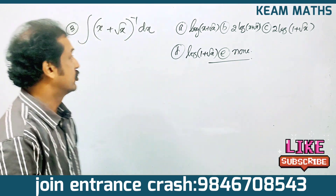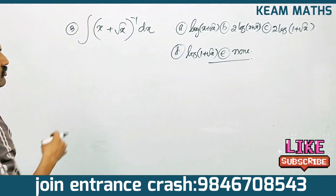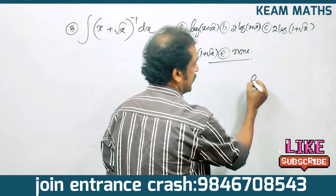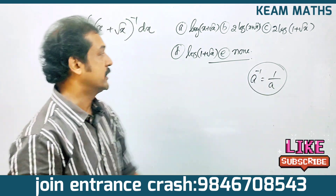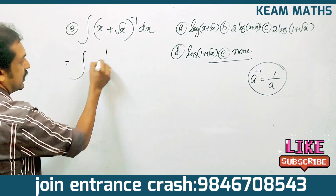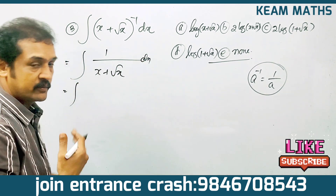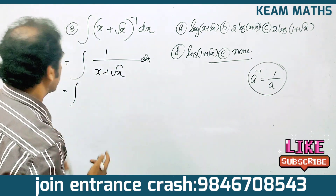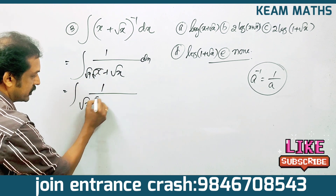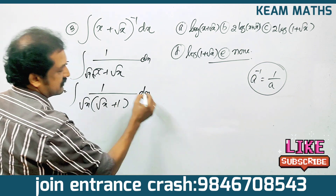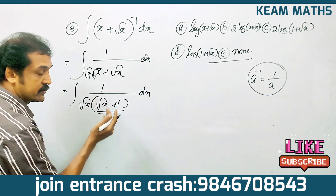The third question uses the substitution method. We have integral (x plus root x) raised to minus 1 dx. Since (x + root x)^(-1) means 1 by (x + root x), we can factor out root x to get 1 by root x into (root x plus 1). Let u equal root x plus 1, so du equals 1 by 2 root x dx, which gives 2 du equal to 1 by root x dx.